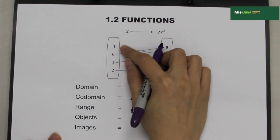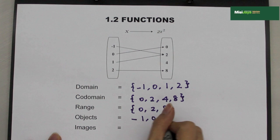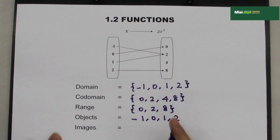For the objects, it will be {-1, 0, 1, 2}. The images are {0, 2, 8}.